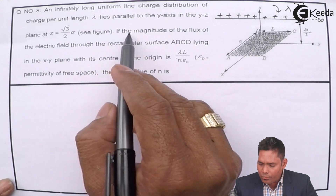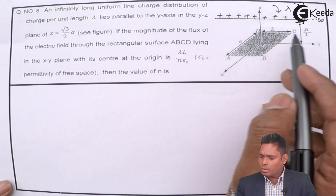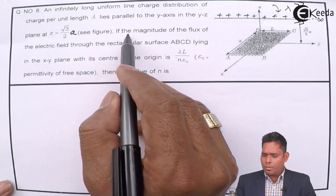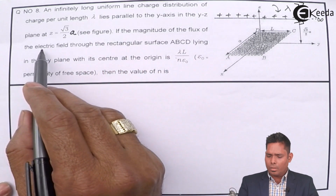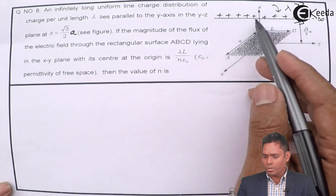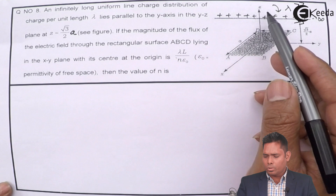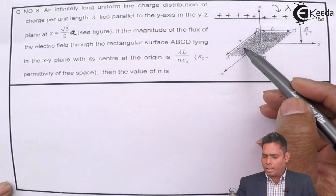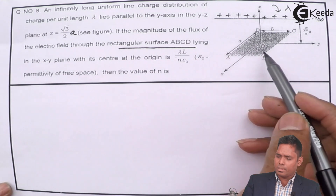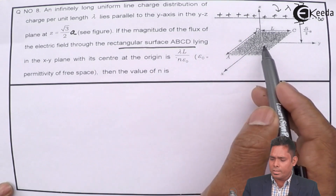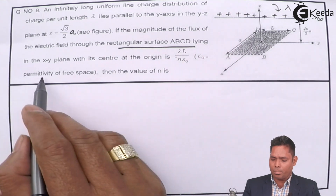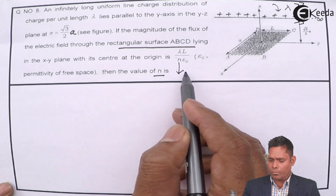If the magnitude of the flux of the electric field through the rectangular surface ABCD — where this total distance is a and this is root 3 upon 2 · a — lying in the x-y plane with center at the origin, is λL / nε₀, where ε₀ is the permittivity of free space, find the value of n.